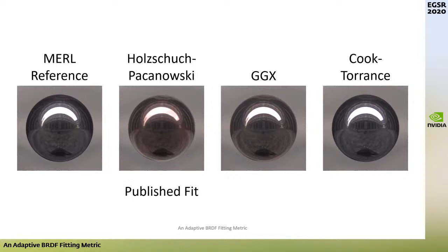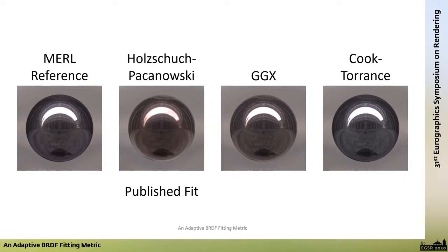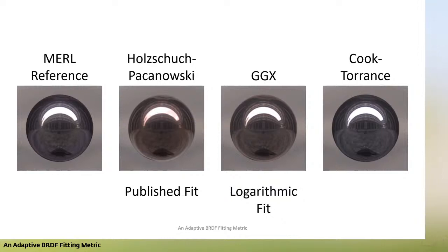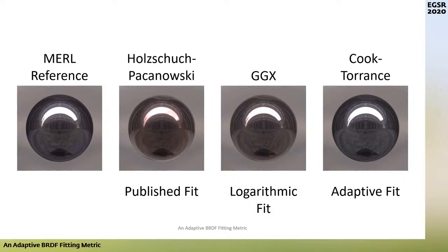This has to do with the fitting methods used. Alshu-Pakanowski used the fit from their supplemental material — not bad for many materials, but room for improvement on complex ones. For GGX, a state-of-the-art logarithmic fitting strategy was used. For Cook-Torrance, our own adaptive fitting strategy was used. The takeaway: BRDF fitting matters. In fact, it can matter just as much as what model you use, and sometimes even more.